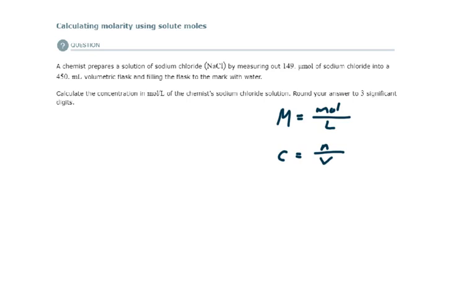So if we're talking about the concentration of the solution, the concentration of the solution is going to be equal to the number of moles of solute per volume of solution. So what do we have in this problem? What information do they give us? Let's write out our givens here. They tell me that I have 149 micromoles of sodium chloride, and they also tell me that I have a 450 milliliter solution. That's the volume of the volumetric flask.